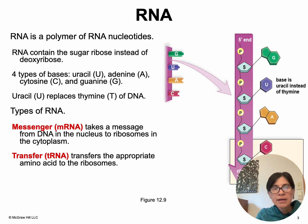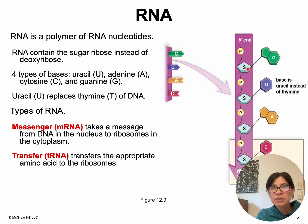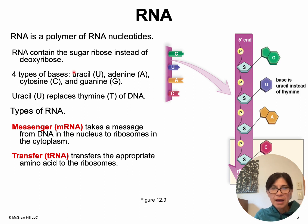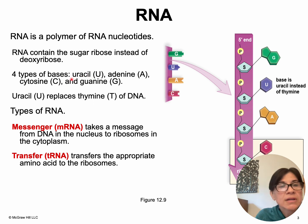RNA is single-stranded. It has a nucleotide composed of a phosphate, sugar, and a base. But unlike DNA, which has the sugar deoxyribose — that's why it's called DNA — RNA has the sugar ribose, and that's why it's called RNA. Another difference between DNA and RNA is that the base thymine is replaced with uracil. So the bases in DNA are thymine, adenine, guanine, and cytosine, while in RNA we have adenine, guanine, cytosine, and uracil instead of thymine. The four types of bases in RNA are uracil, adenine, cytosine, and guanine — uracil replaces thymine.